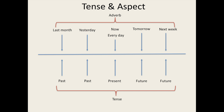So let's discuss tense. Tense describes when an action took place in relation to the present moment. If it's taking place as we speak, is ongoing, or is a regular occurrence, we use the present tense. If it took place some time ago, we use the past tense, and if it is yet to occur, we use the future tense.